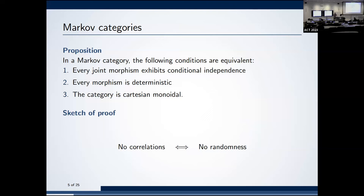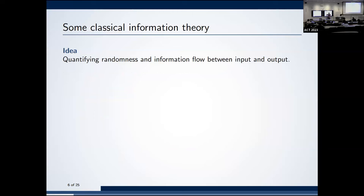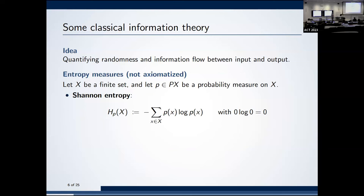If there is no correlation there is no randomness, and vice versa — this is a statement about information theory: in information theory you would say if there is no entropy there is no mutual information, and the other way around. But that is quantitative while what we've seen so far is qualitative. The goal of this talk is to do information theory in a way that is compatible with Markov categories — to the point that information theorists are already thinking a little bit in terms of Markov categories.